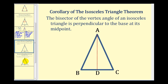There's a corollary to this theorem. The corollary states that the bisector of the vertex angle of an isosceles triangle is perpendicular to the base at its midpoint. So D would be the midpoint of segment BC, and it forms a right angle with that segment. We won't prove this corollary in this video.